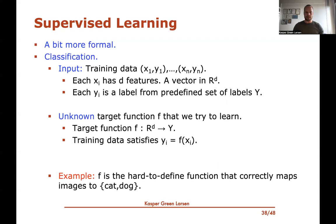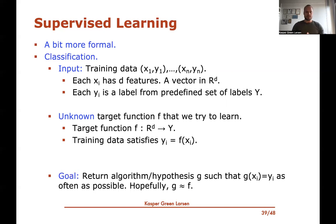For example, in the image recognition setup, F — the unknown target function — is the hard-to-define function that somehow correctly maps images to the two classes cats and dogs. We cannot even fully specify this function, but it's out there and this is the one we're trying to learn. The goal is to output a hypothesis G such that on the training data this hypothesis predicts the label correctly as often as possible. Then we cross our fingers and hope that this also means it does so on new data.